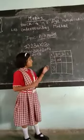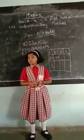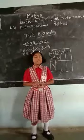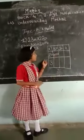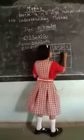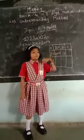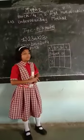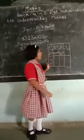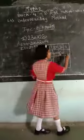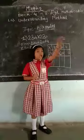Next step is to multiply. So, 2 multiplied by 2 is 4. Very good. Here is only 1 zero, so I write only 1 zero. Now, 2 multiplied by 2.